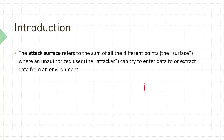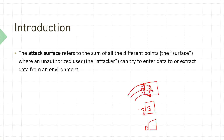Take System A — it has Port 1, Port 2, and Port 3 enabled, giving an attacker three opportunities to penetrate. System B has Port 1 and Port 2, giving an attacker two opportunities. System C has only Port 1, giving the attacker just one entry point.